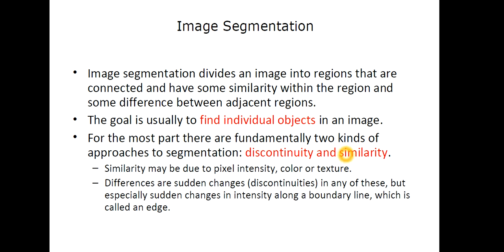Similarity may be due to pixel intensity, color or texture. And differences are sudden changes, that is, discontinuities in any of these: intensity, color or texture. But specially, sudden changes in intensity along a boundary line is known as edge. And that is the main basis on discontinuity based segmentation.